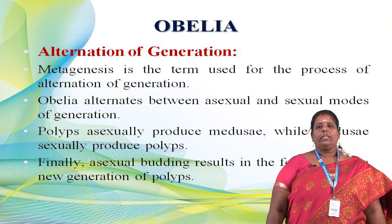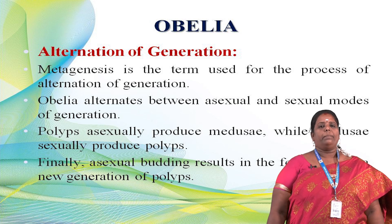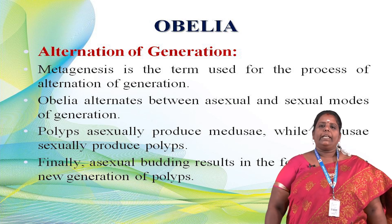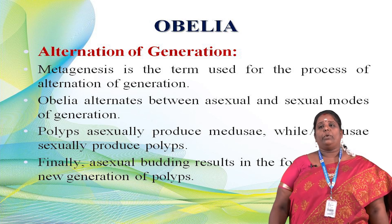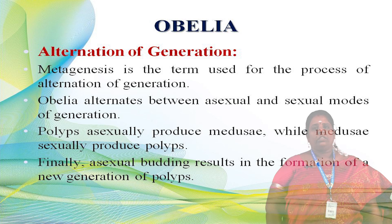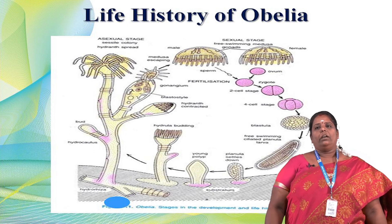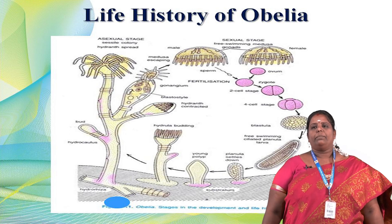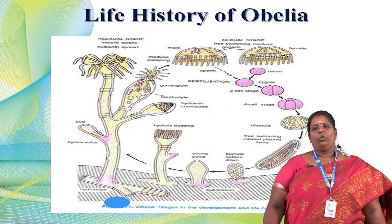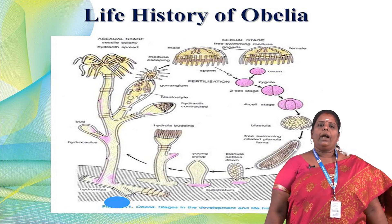Alternation of generations — called metagenesis — is the term used for the process where Obelia alternates between asexual and sexual modes of generation. The polyps asexually produce a medusa, and the medusa sexually produces a polyp. That is the peculiar character of Obelia. Asexual budding results in the formation of a new generation of polyps. In the life cycle diagram: the medusa develops sperm on one side and ovum on the other, fertilization forms a zygote, then four-cell stage, blastula, and planula.